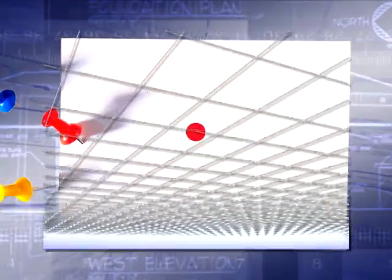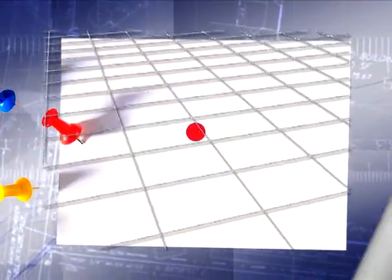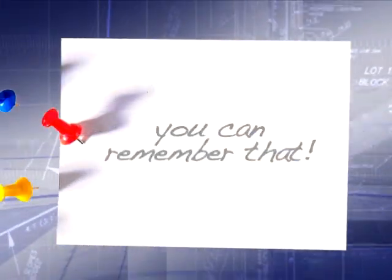A line is a path that's endlessly straight. Part of a line with one endpoint is a ray. Line segment, two endpoints, that's a fact. A plane is an endless surface that's flat. A point's location in space is exact. Now class, I know you can remember that.